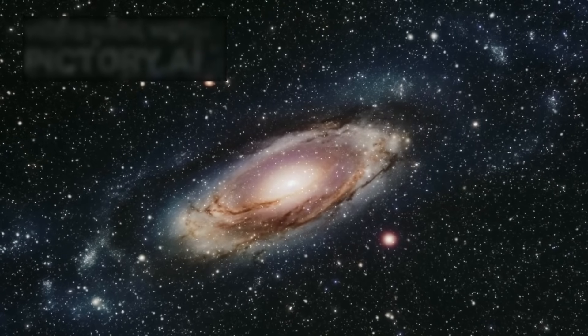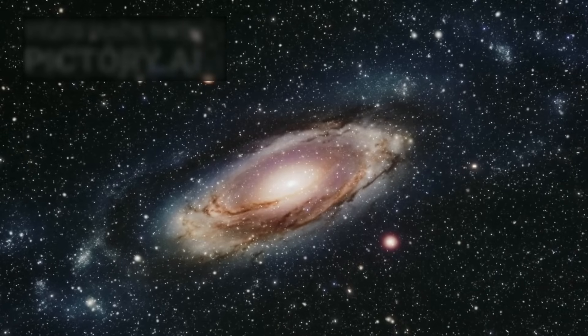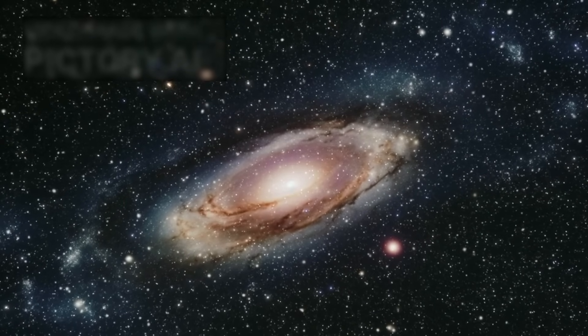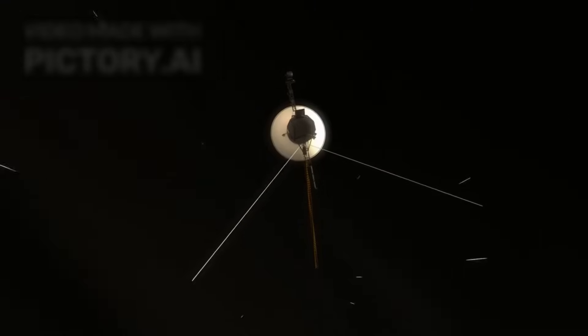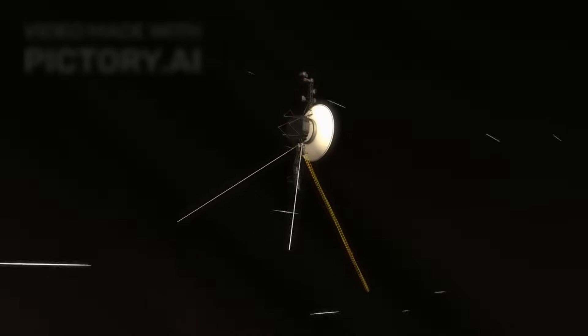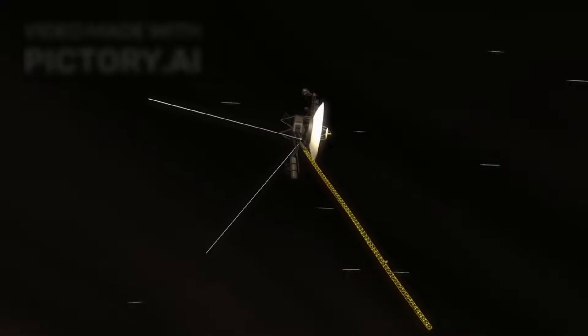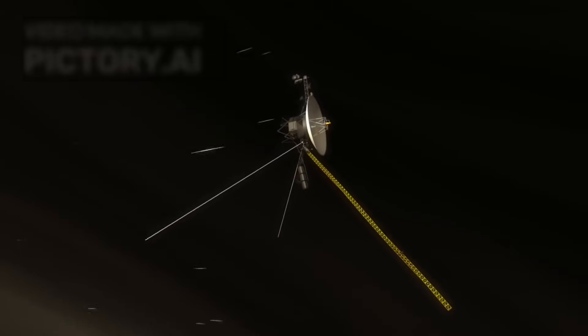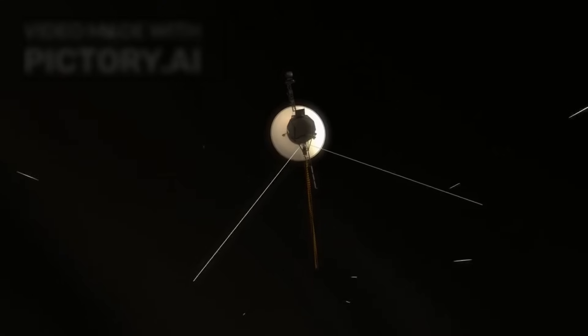In the silent reaches of deep space, where sunlight is faint and the stars are countless, two human-made objects drift farther from us than anything else we've ever built. These are Voyager 1 and Voyager 2, two small spacecraft launched decades ago with a mission that began as a journey through our solar system, but that has since evolved into something far more extraordinary, a voyage into the unknown.